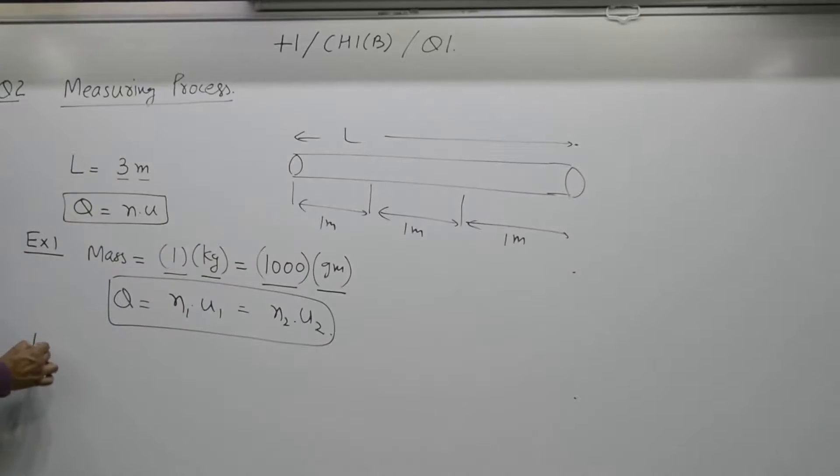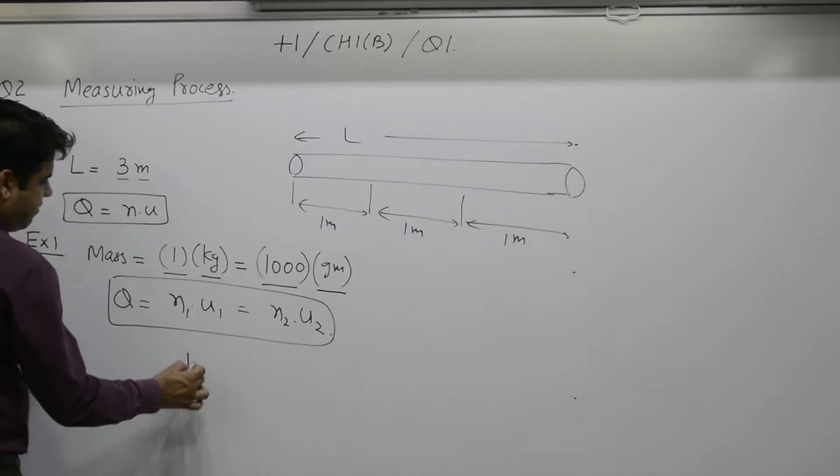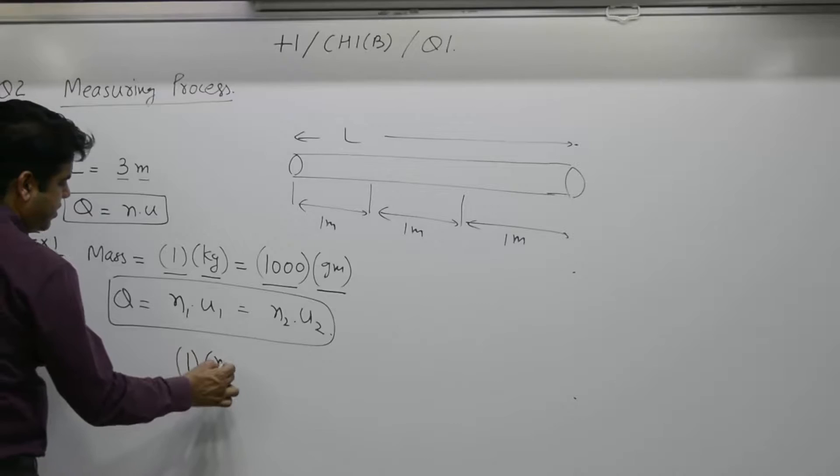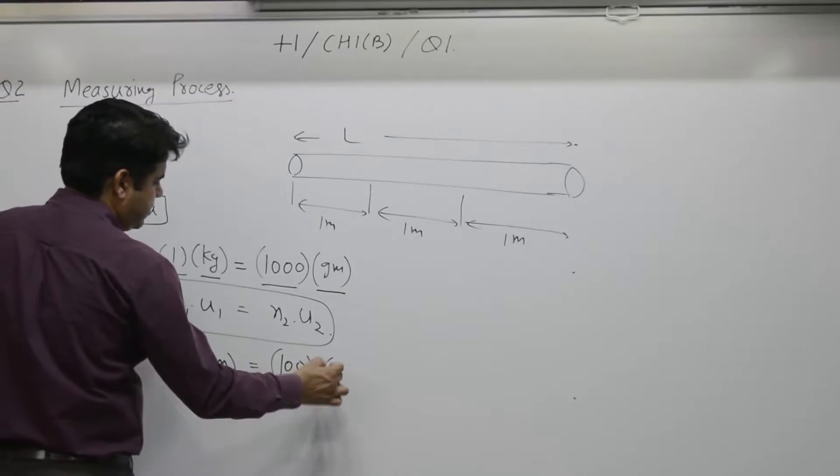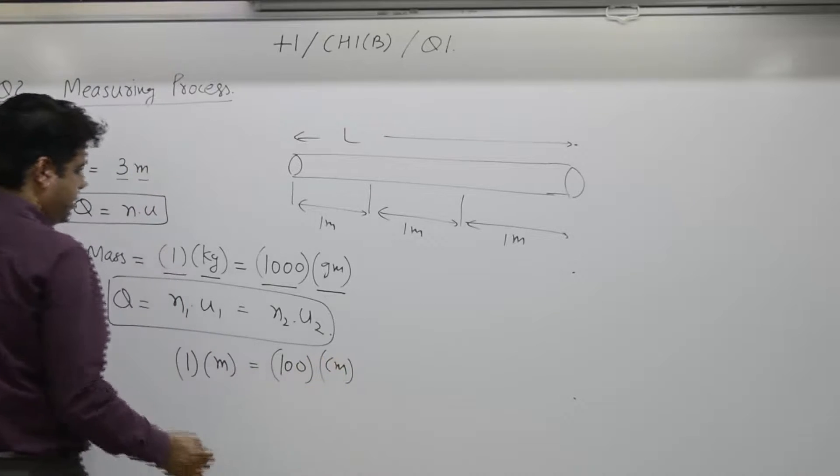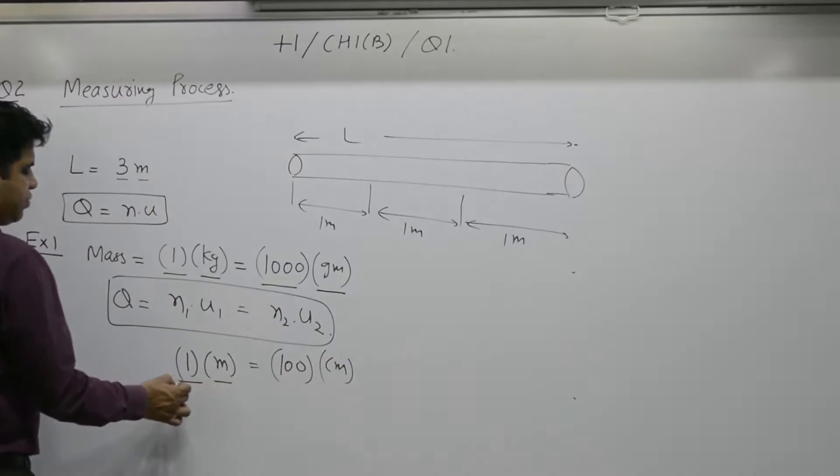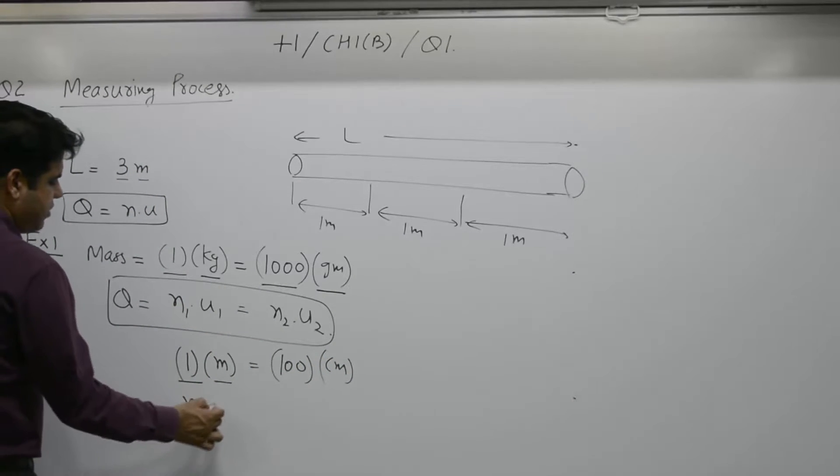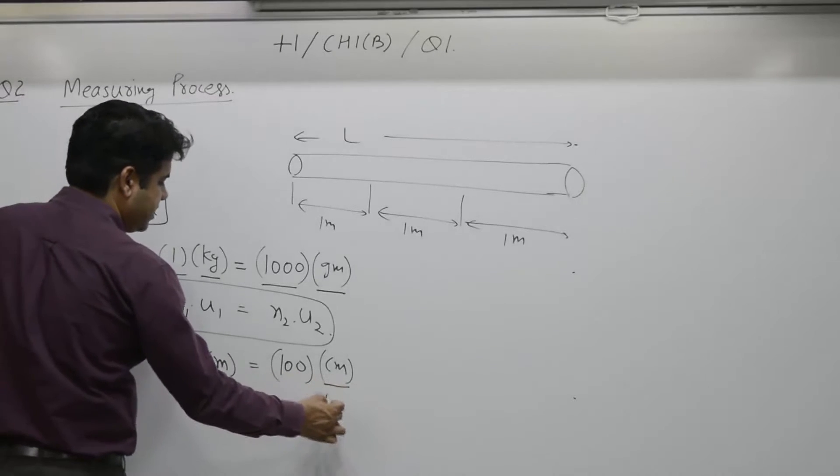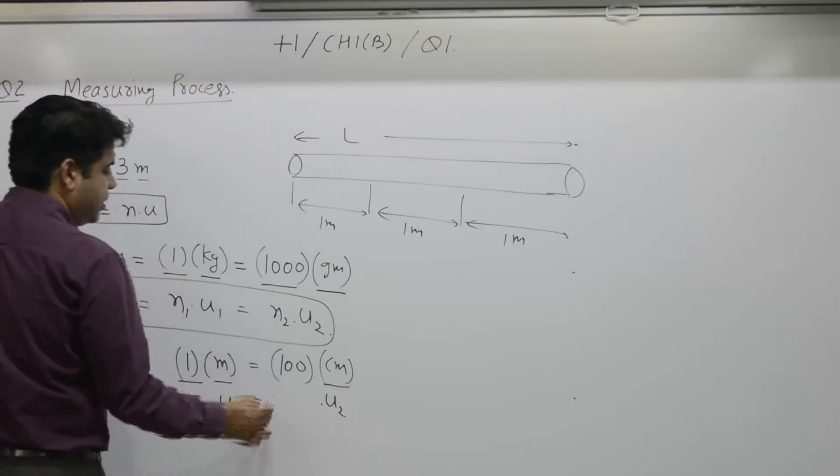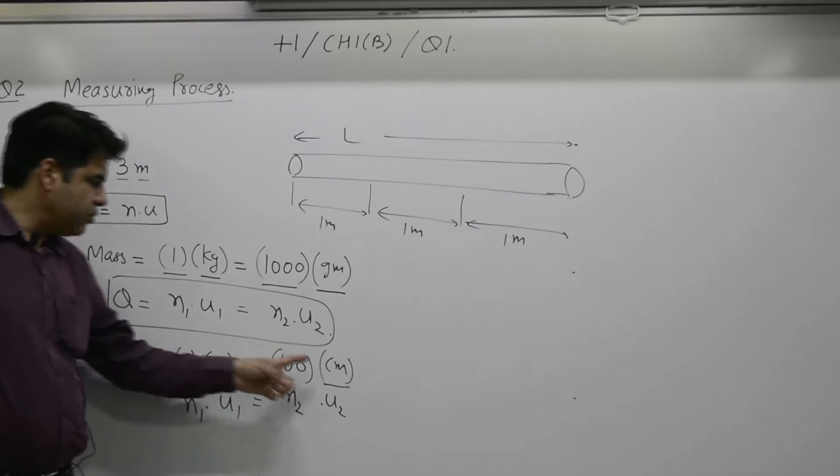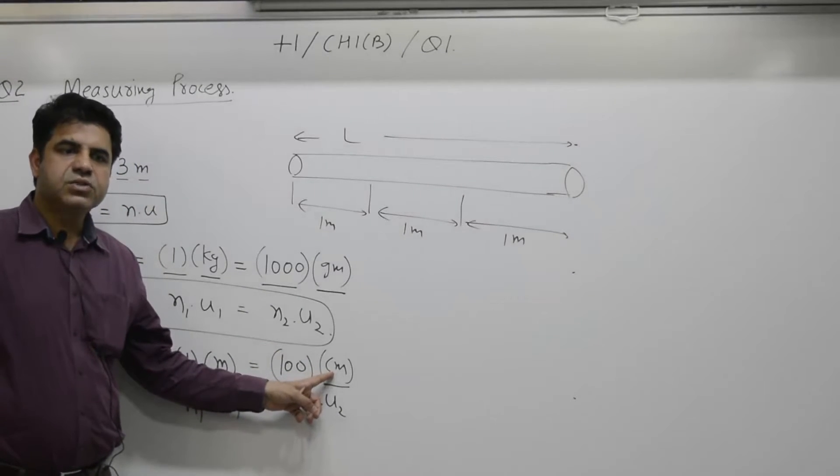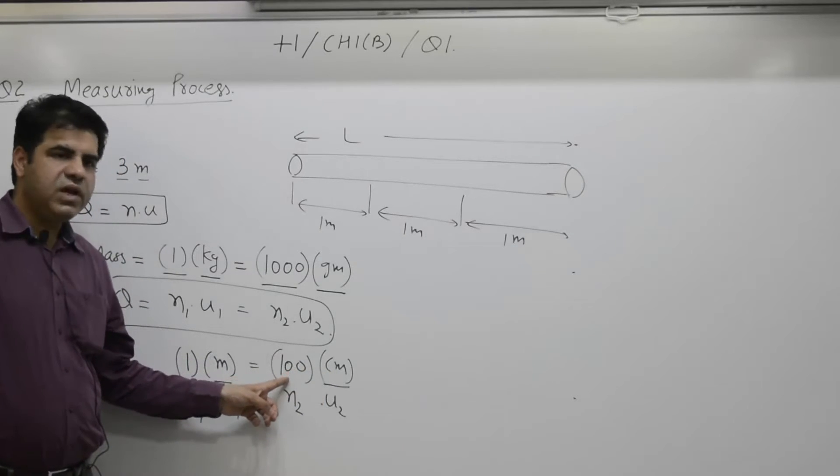Example 2: Length is say 1 meter is equal to 100 centimeter. Meter is unit, 1 is numerical value - N1 U1. N2 is its numerical value. Small unit - centimeter is small unit, its numerical value is large.